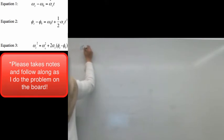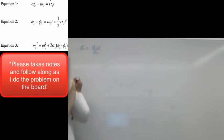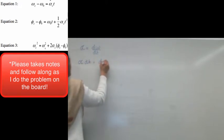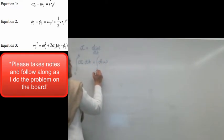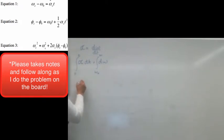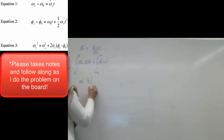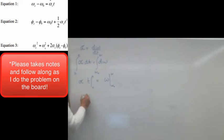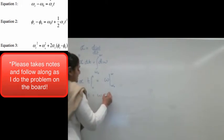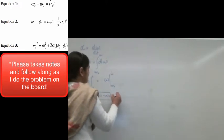To derive the first equation of motion, we start from α = dω/dt. Rearranging gives α dt = dω. Integrating from 0 to t on the left and from ω₀ to ω on the right, since α is constant it factors out, giving α·t = ω − ω₀. This is our first equation of motion, analogous to a·t = v − v₀ for linear motion.